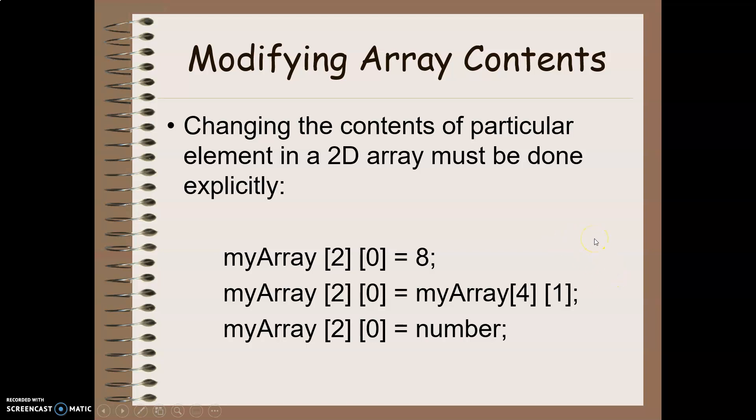To modify the contents of an array, we do it the same way we do with a 1D array. We just say the position we're working with, row, column, and then its new value. I can set it to a hard-coded value. I can set it to another location in a different array or the same array for that matter. Or I can set it to a variable that evaluates to the same data type that is stored in my array.